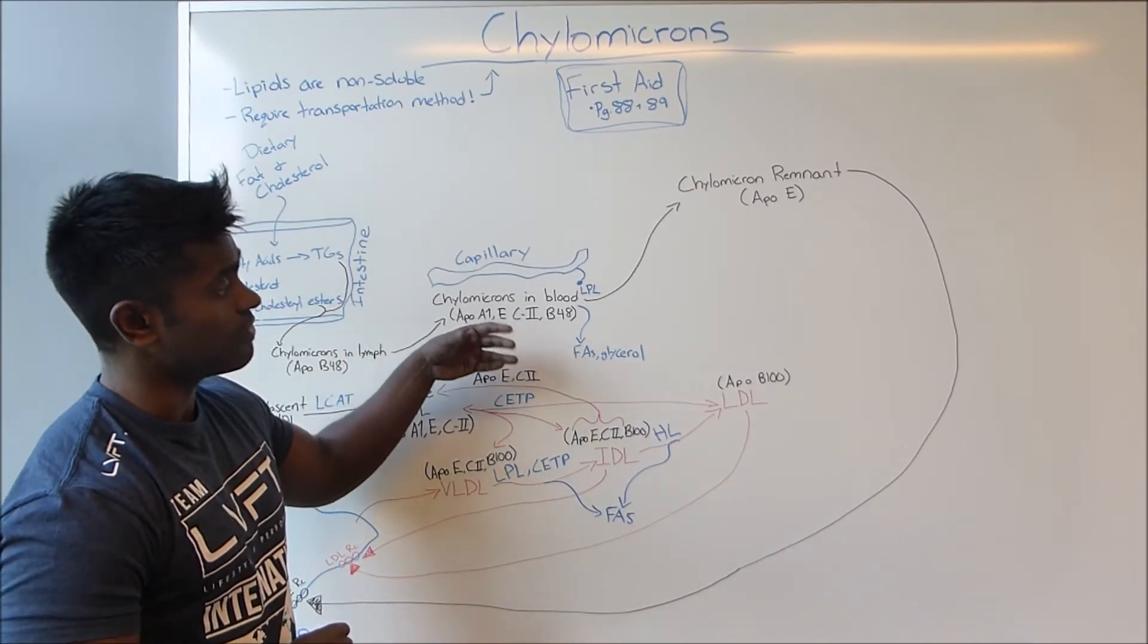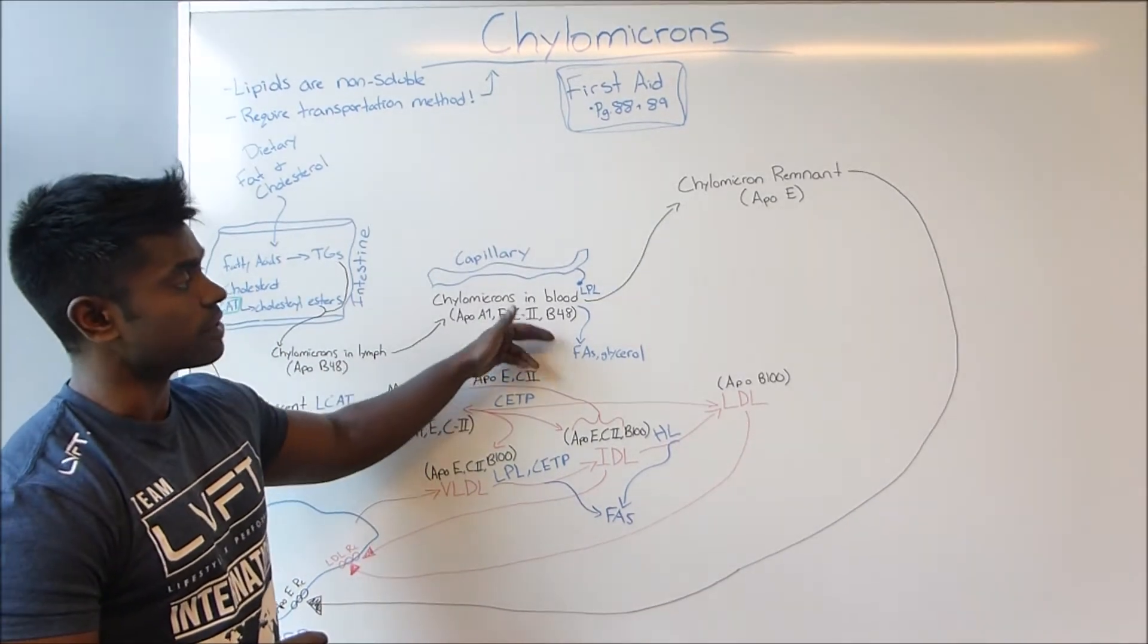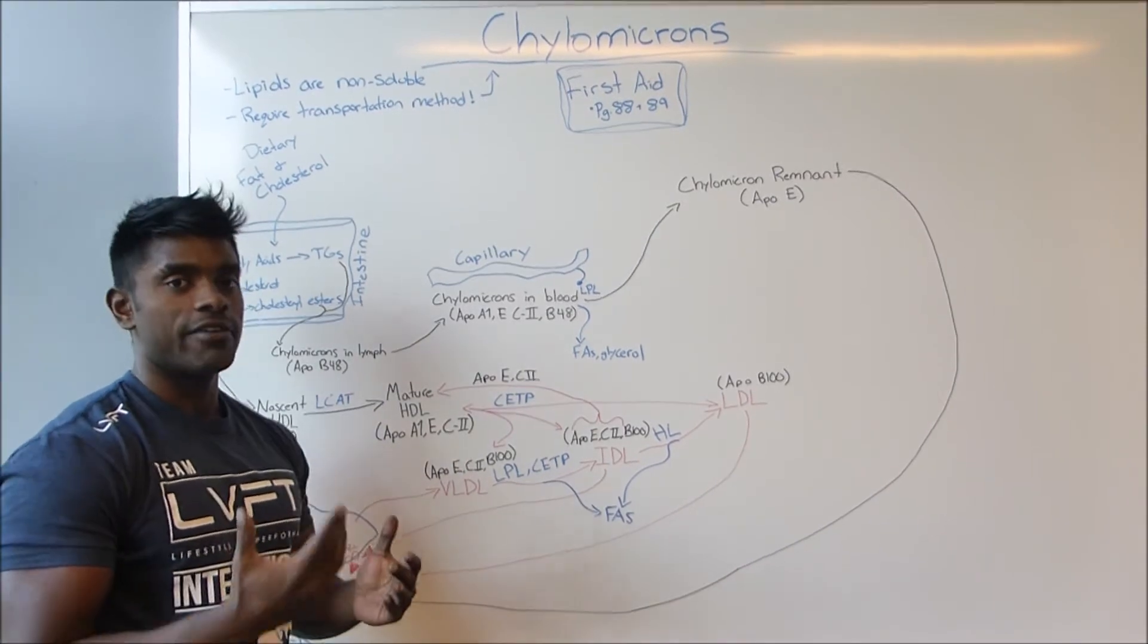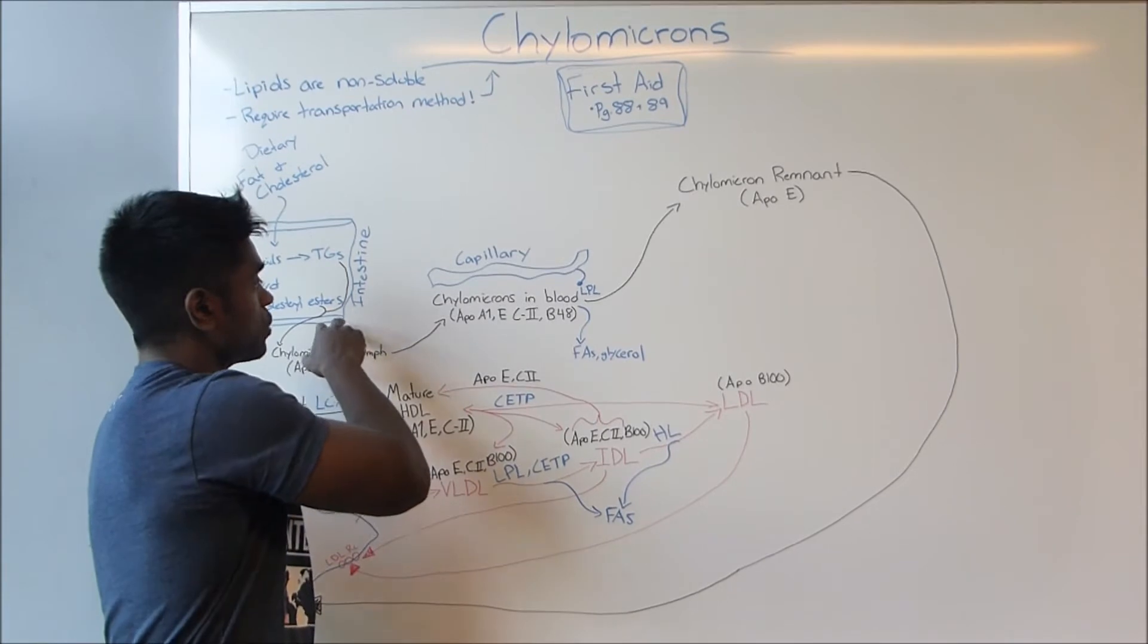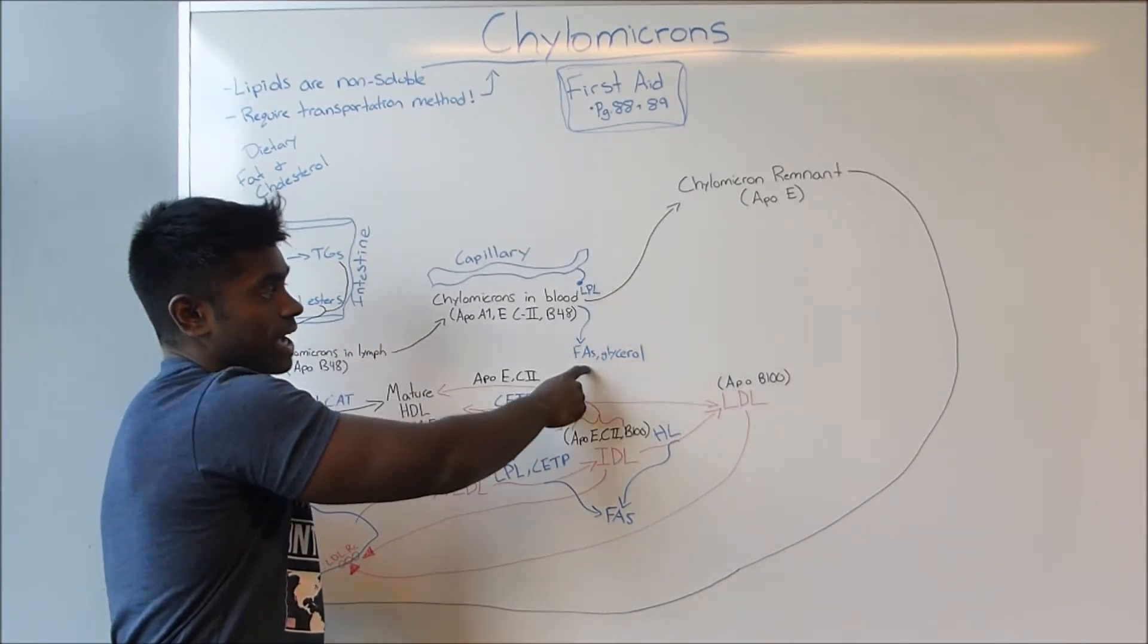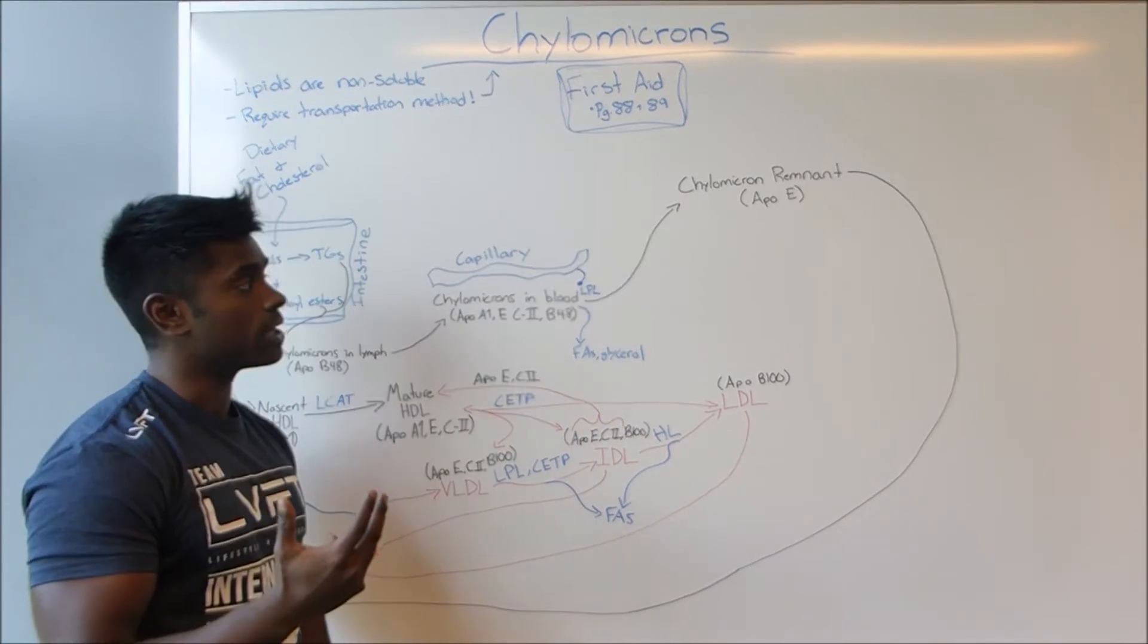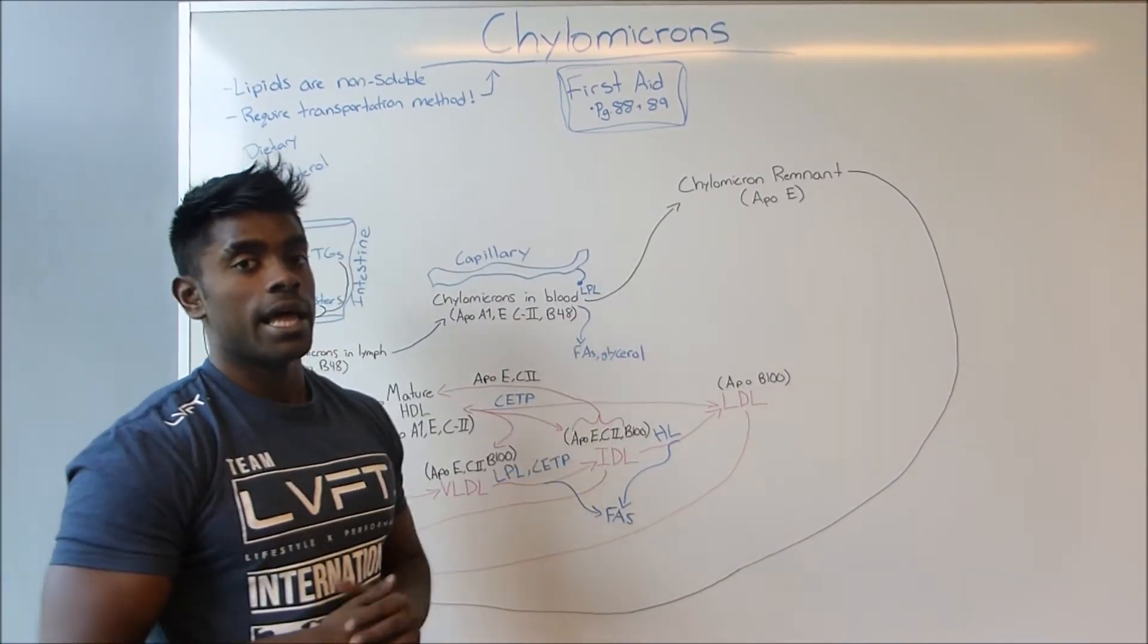The triglycerides which it contains can be converted into fatty acids and glycerol. Now what we have is a chylomicron with a lot less triglycerides due to being broken down by lipoprotein lipase into fatty acids and glycerol. This chylomicron becomes what is called a chylomicron remnant.